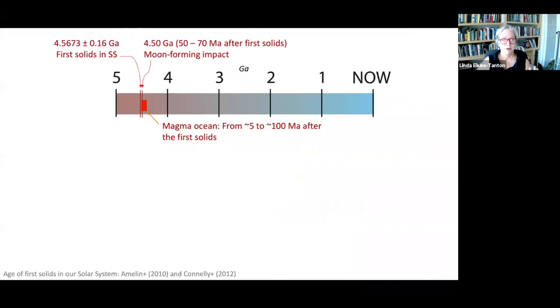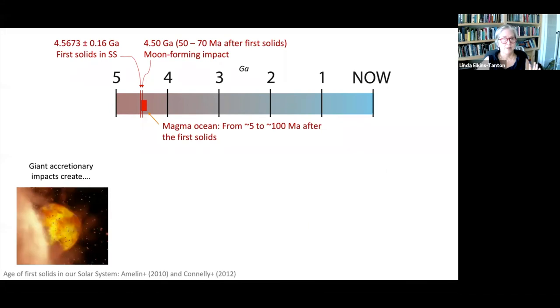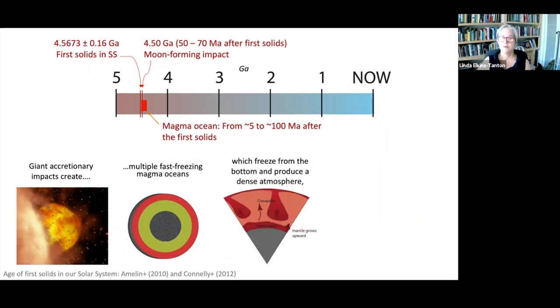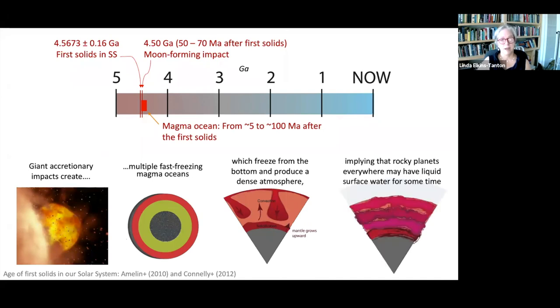And so finally, here's our same timeline with the age of the first solids and our newly defined age of the earth. That is the moon forming impact, the last giant impact and final magma ocean on earth. So giant accretionary impacts create multiple fast freezing magma oceans on rocky planets, which freeze from the bottom and produce a dense atmosphere, implying that rocky planets everywhere may have had liquid surface water for some time and have been habitable. And next time we'll take up right at 4.5 billion years ago and talk about the formation of earth's moon.